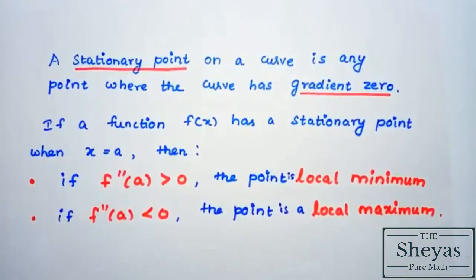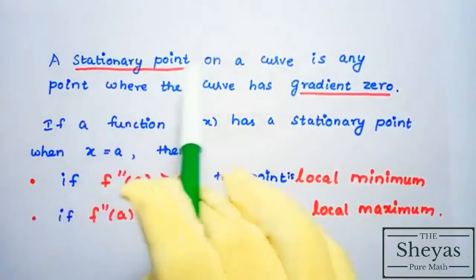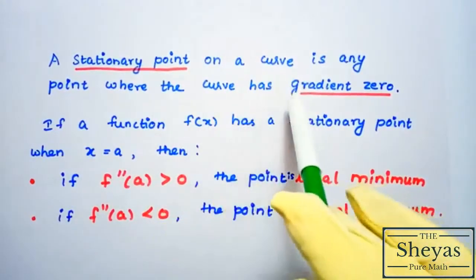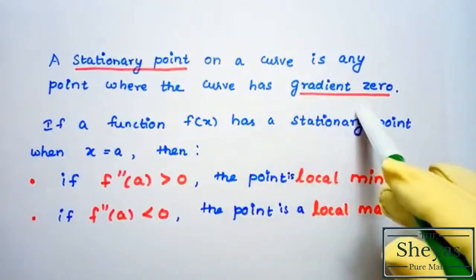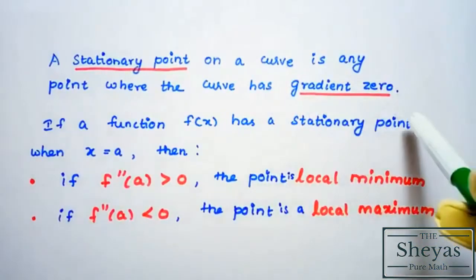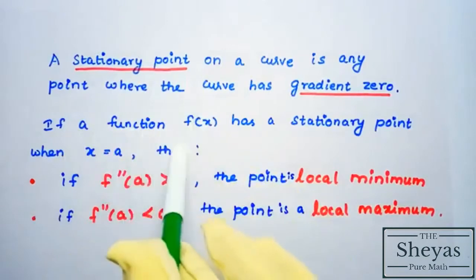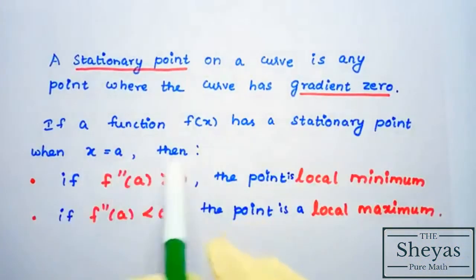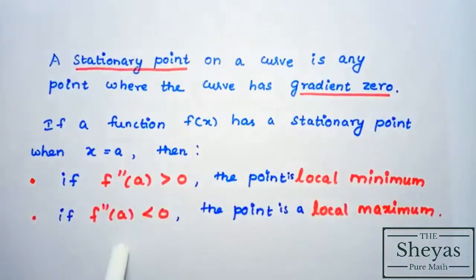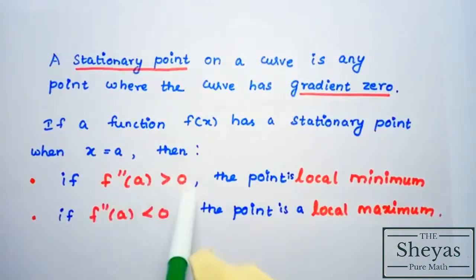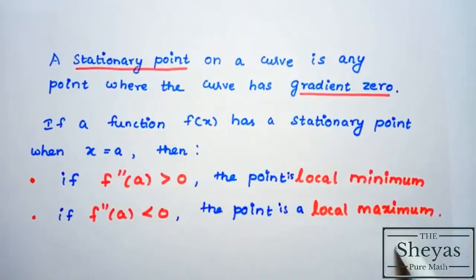A stationary point on a curve is any point where the curve has gradient 0. The gradient dy/dx = 0, that is f′(x) = 0 — the points obtained are called stationary points. If a function f(x) has a stationary point at x = a, then if f″(a) > 0 the point is a local minimum, and if f″(a) < 0 the point is a local maximum. Using all these concepts we are going to solve the problem and sketch the graph.